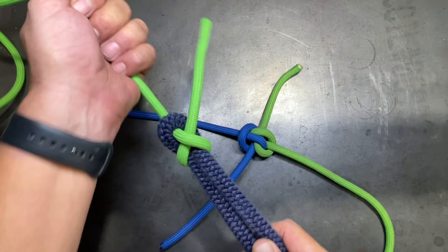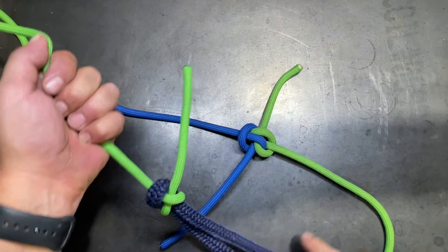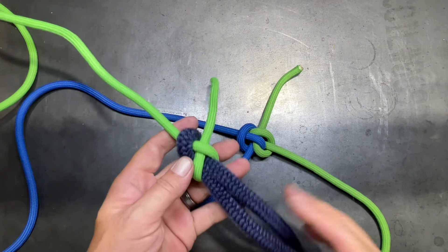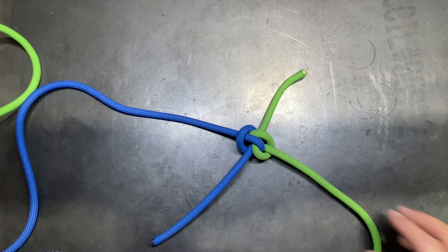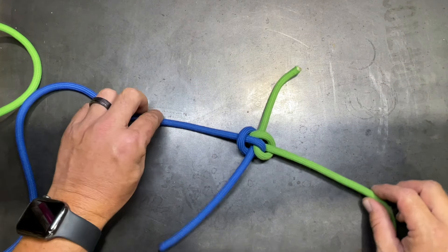As an example, this is 5-16ths and this is half inch line. And so this knot actually works better than the Zeppelin because of the line difference. But if these were the same size, then the Zeppelin would be a far superior bend knot.